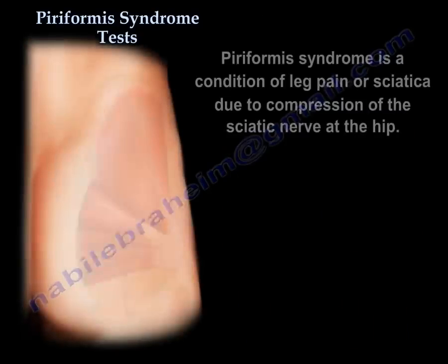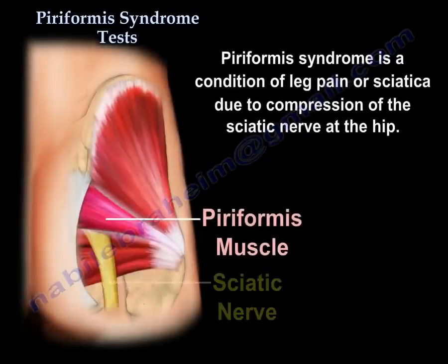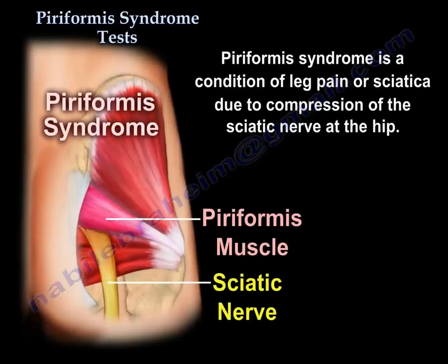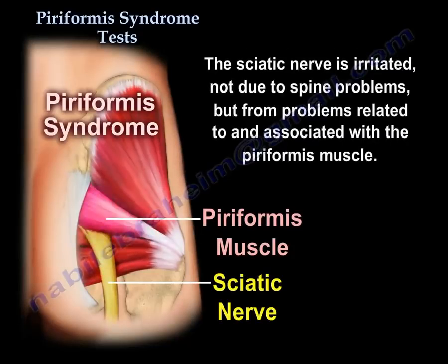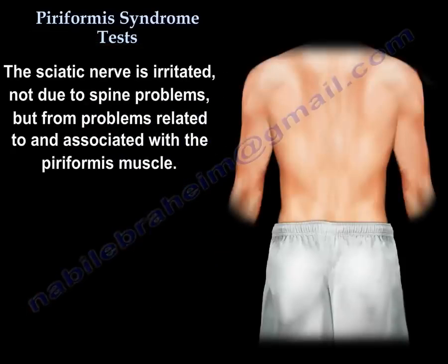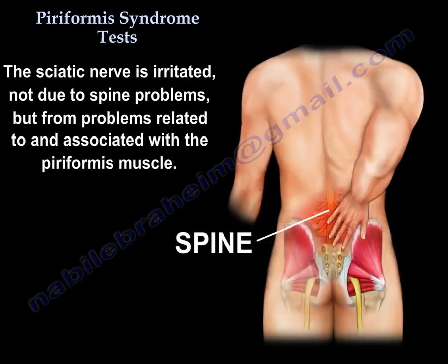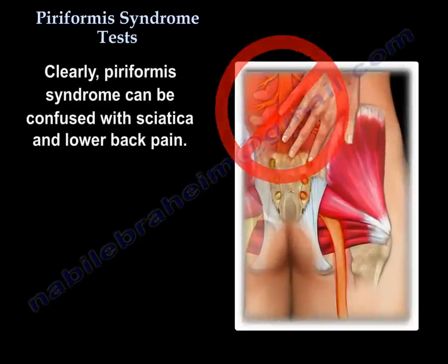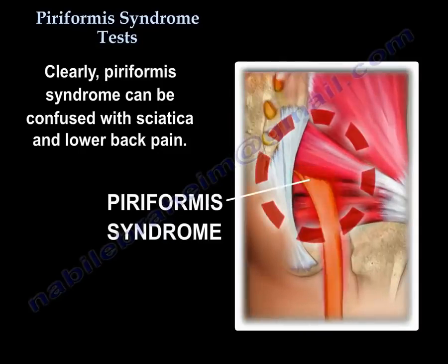It is a condition of leg pain or sciatica due to compression of the sciatic nerve at the hip. So the sciatic nerve is irritated not from a spine problem but from problems related to and associated with the pariformis muscle. Clearly, the pariformis syndrome can be confused with sciatica and lower back pain.